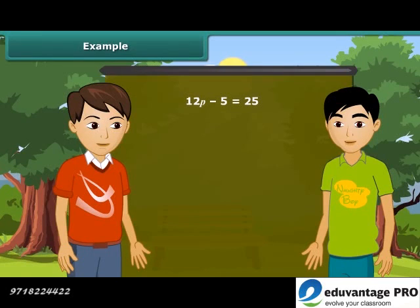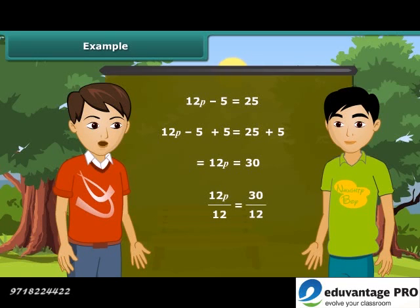Ajay, can you solve this equation? Yes. To get P on the left hand side, we will add 5 to both sides. We get 12P equals 30. Now divide both sides by 12. We get the answer P as 5 upon 2. Very good. Do you know that we can solve these problems by transposing also?